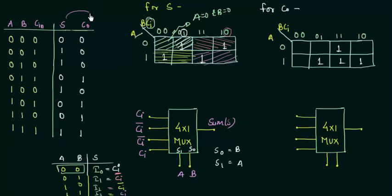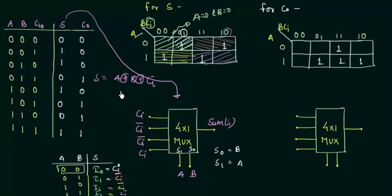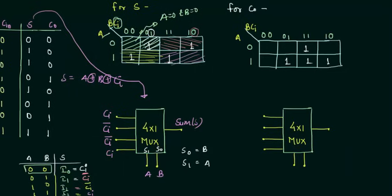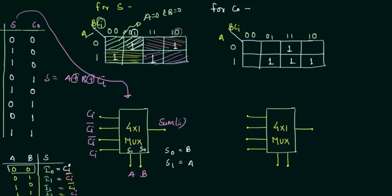This Sum has been implemented using a single 4×1 MUX IC. If you remember, Sum S equals A XOR B XOR Cin, which normally requires two XOR gates. But when using multiplexers, we only require a single IC — this is the advantage of using MUX-based implementation that I have been talking about.